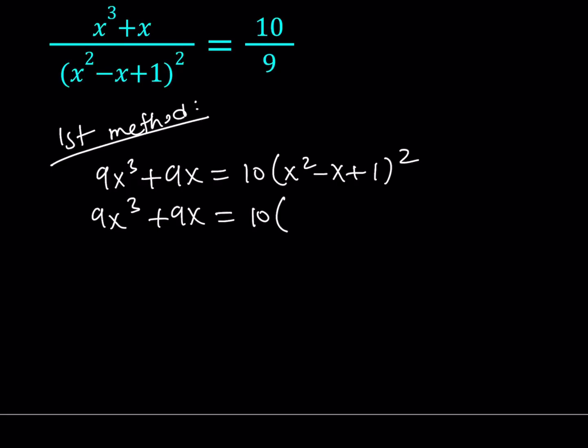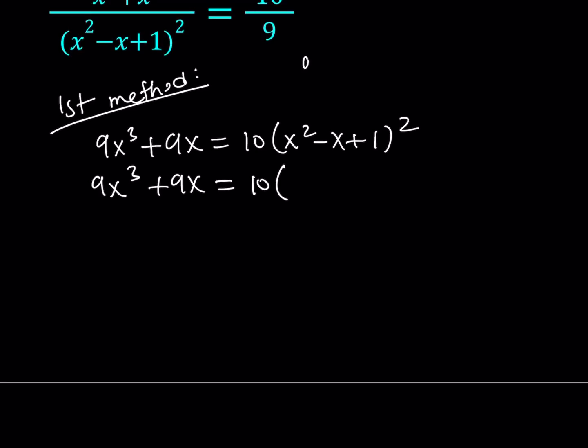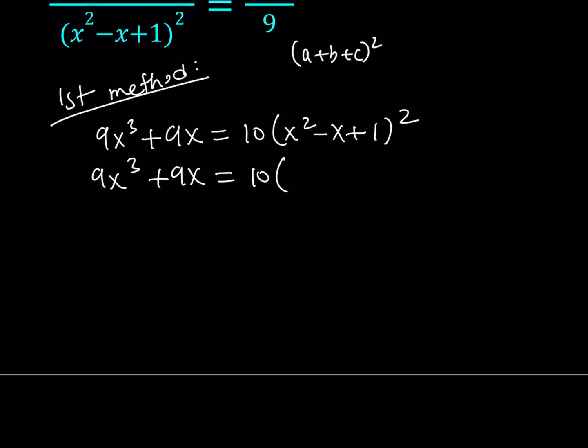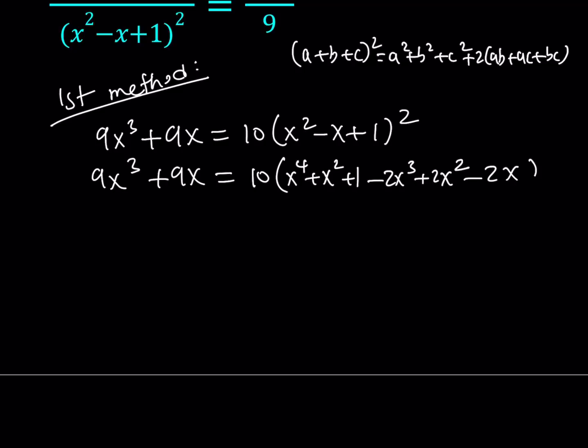To square x squared minus x plus 1, I can use the formula a plus b plus c quantity squared, or I can just put the two quantities together and square it that way too. Either way is fine, and no matter what you do, you're going to get the same answer. So this is going to give me x to the fourth plus x squared plus 1, and then I'm getting minus 2x cubed plus 2x squared minus 2x. We actually have these two expressions, and we can add them up and make it 3x squared.